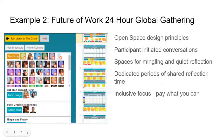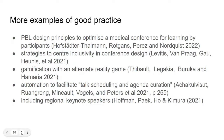Another example was the 24-hour Global Gathering in September 2020, organized on open space design principles, which privileges conversations initiated by participants and focuses on conversation rather than presentation. There were spaces for mingling and quiet reflection, lots of dedicated reflection time, and a pay-what-you-can-afford approach for inclusivity. A few more examples include using problem-based learning design principles, centering inclusivity in the design, gamification, automation to facilitate talk scheduling, and for bigger global conferences, including regional keynote speakers and focuses.